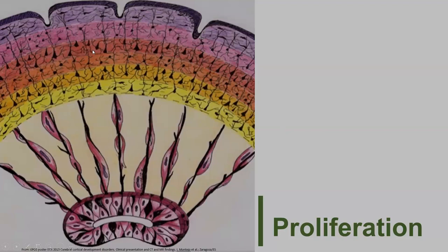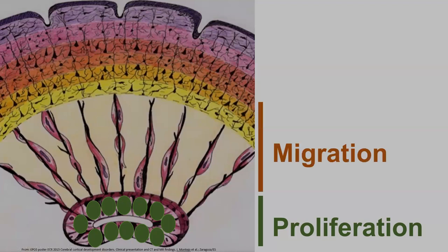The cerebral cortex is situated in the outermost part of the cerebral hemisphere, so these primitive neurons have to get there. They do that in the second phase, which is migration. To migrate to the developing cortex, these neurons are helped by radial glial cells, which have very long processes extending all the way from the germinal matrix to the developing cortex. The neuronal progenitor cells can basically use them as a kind of guide wire.